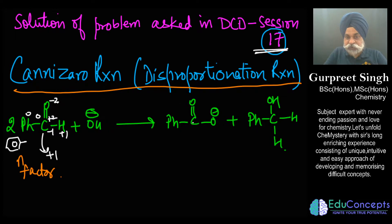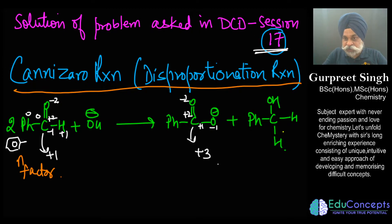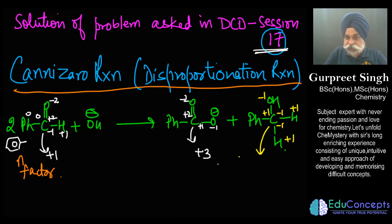Oxygen being more electronegative than carbon gets a negative charge, giving carbon +1 and oxygen -1. So this carbon goes to +3. For the last product, carbon is more electronegative than hydrogen but oxygen is more electronegative than carbon, so carbon gets a positive contribution and oxygen a negative one, making this carbon -1 (i.e., two minus one).